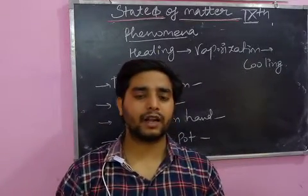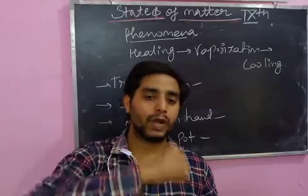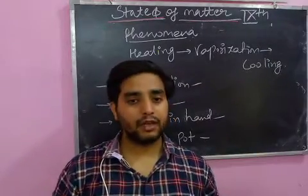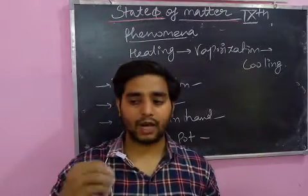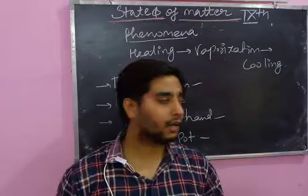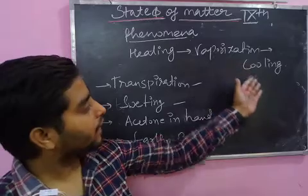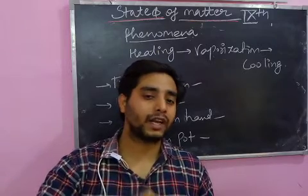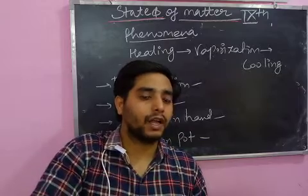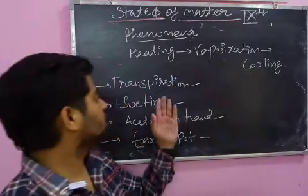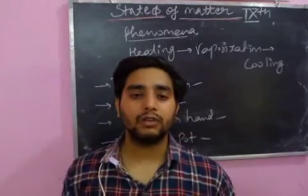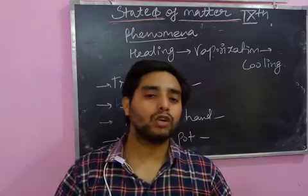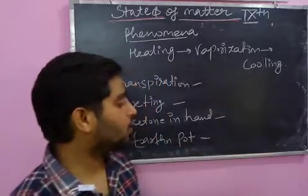Similarly, when we wear cotton clothes, the cotton absorbs sweat, and when sweat evaporates it cools down our body temperature. Another example: if you have cold water in a glass tumbler, you find small water droplets outside the tumbler — those are water vapors from the atmosphere that condense on the cold surface and appear as water droplets.